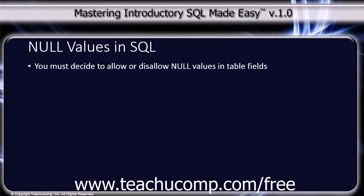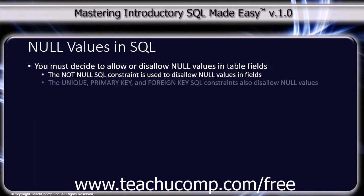You will need to decide how to deal with null values when creating fields within tables. You can often choose to disallow null values within fields by using the NOT NULL SQL constraint when creating the fields in a table. Unique, primary key, and foreign key fields also cannot contain null values, as null values would disrupt the relational abilities of the tables. Note that unless the NOT NULL SQL constraint is employed when creating the fields within a table, the field will typically default to allowing null values.